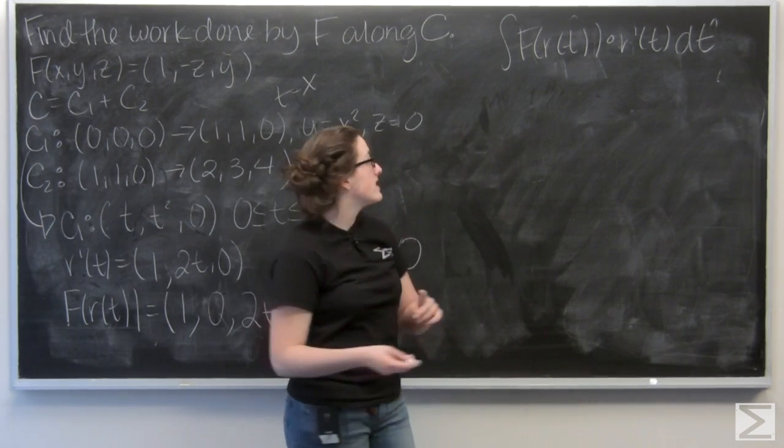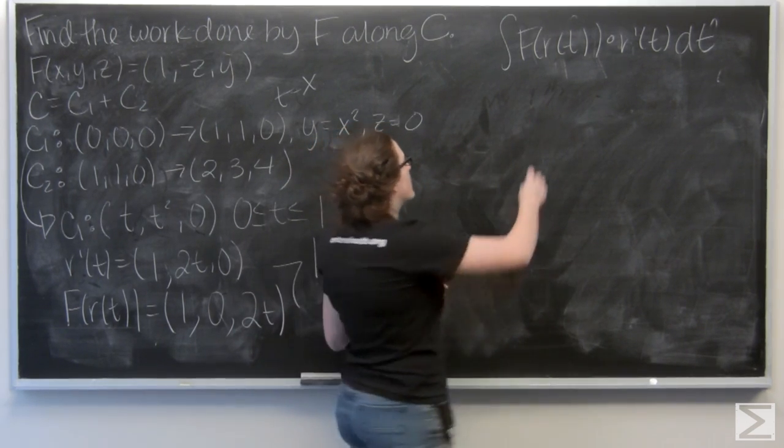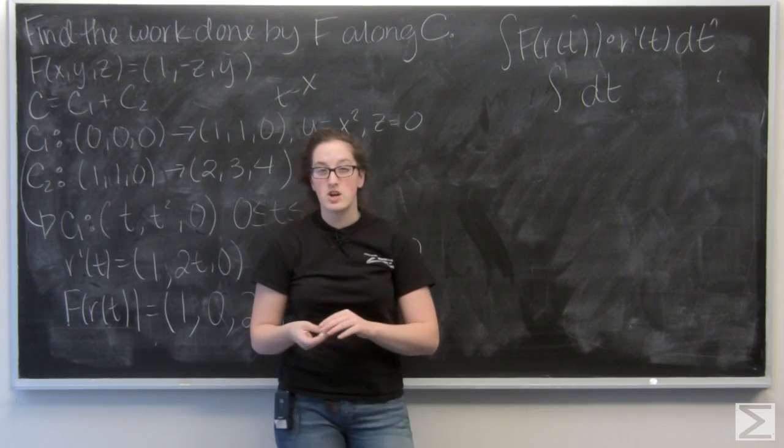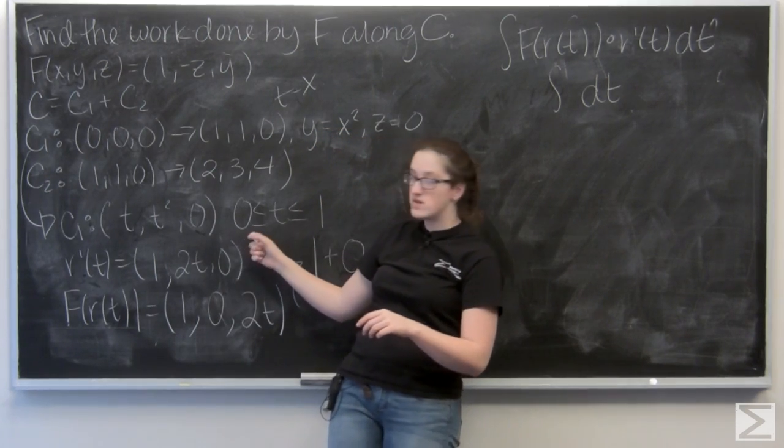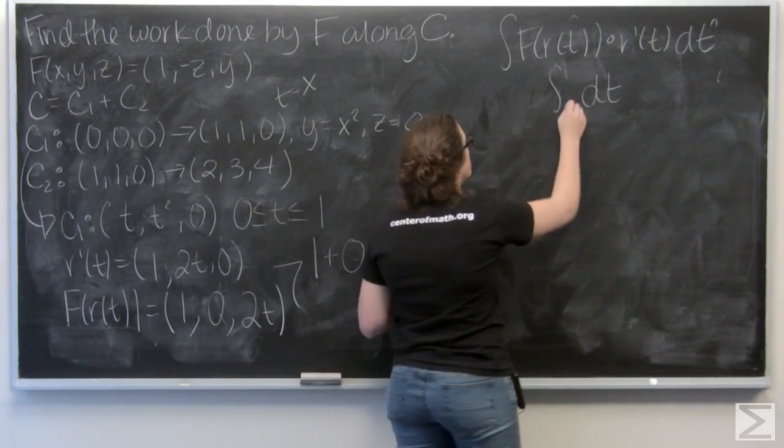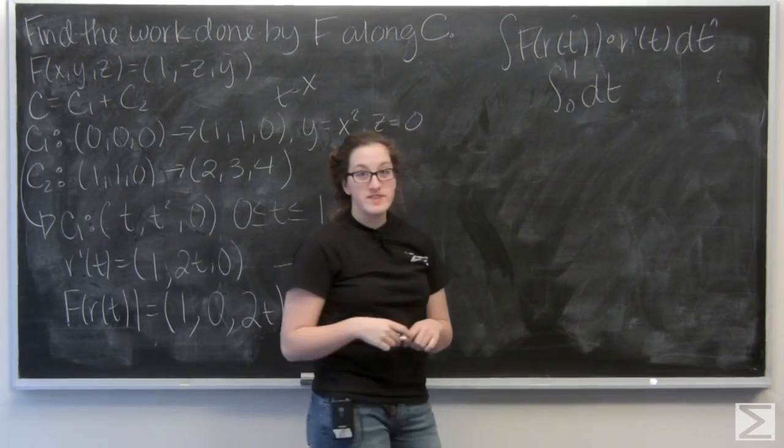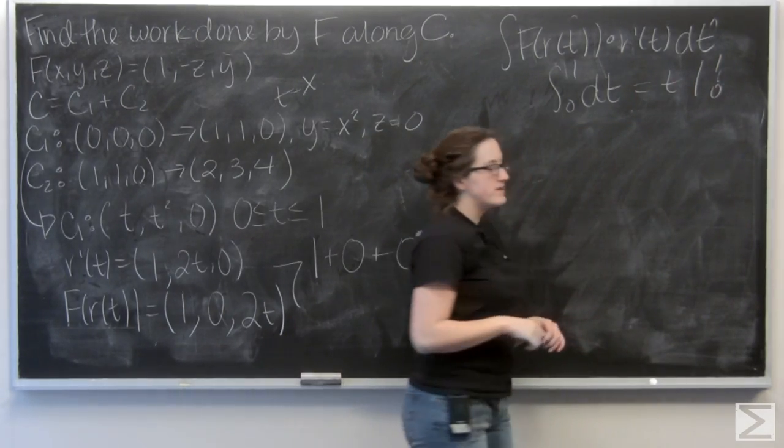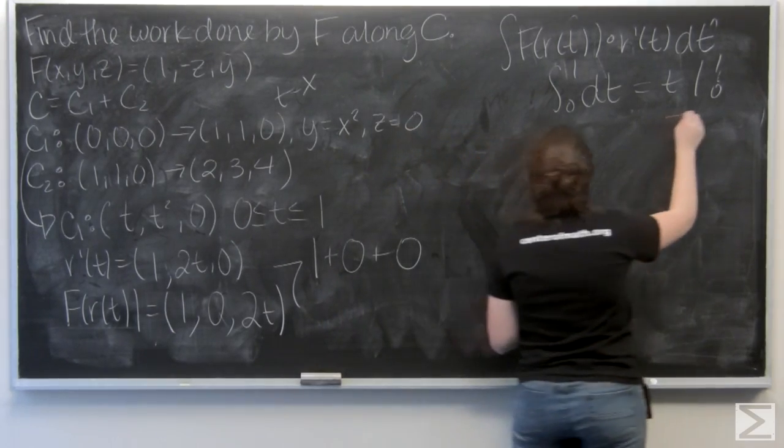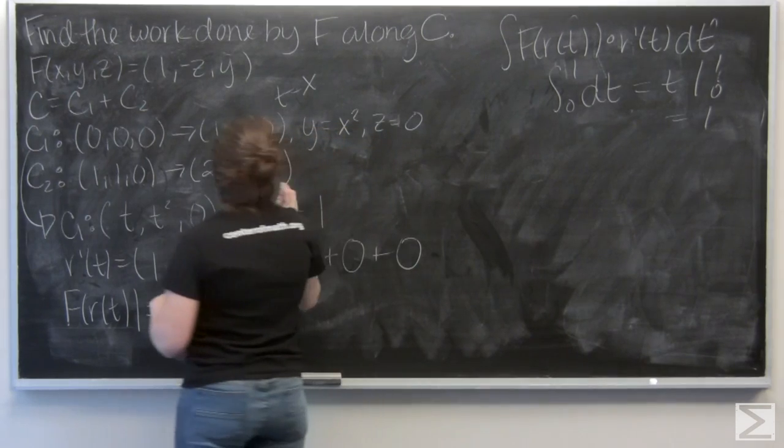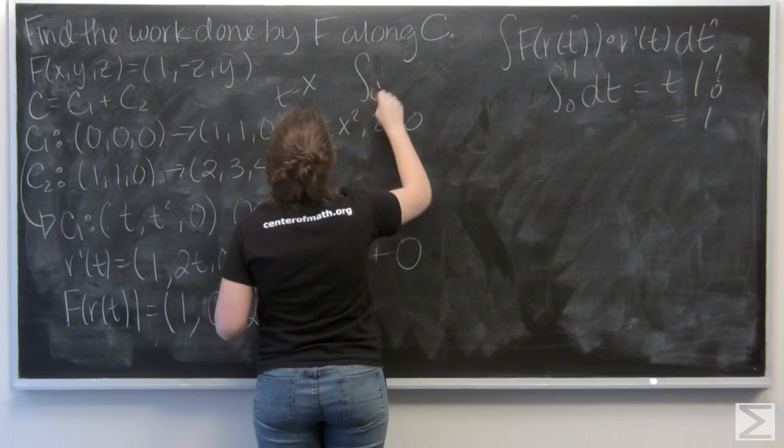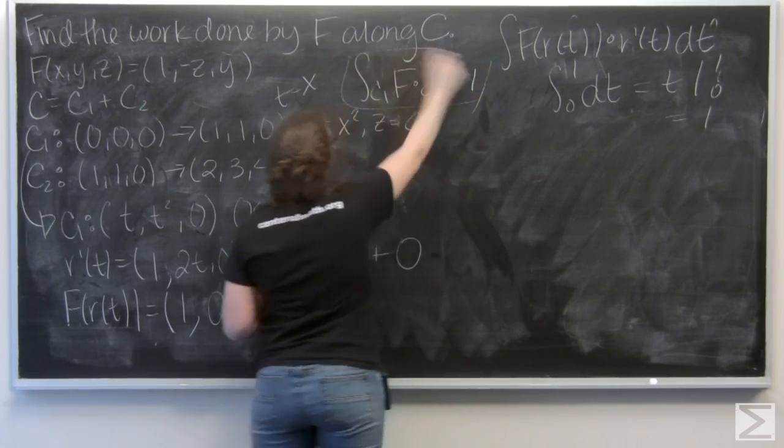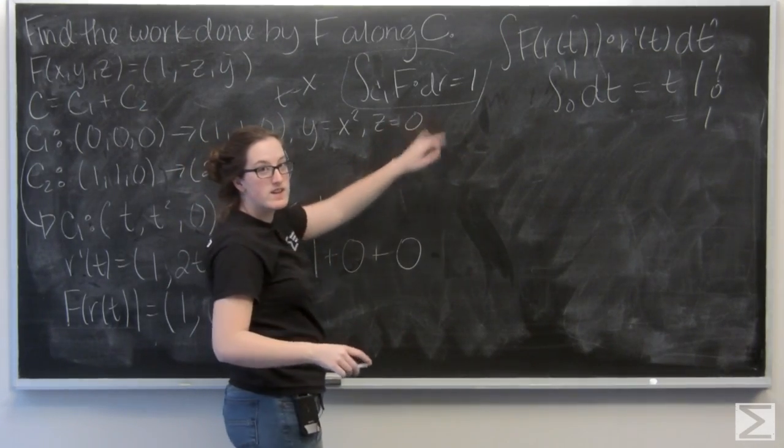So, now let's go ahead and integrate that. So, I have just the integral of dt, and then my bounds of integration are going to be from 0 to 1. Well, the integral of dt is going to be t evaluated from 0 to 1, so I'm just going to get 1. I'll throw it up here so I don't forget, and now let's work on c2.